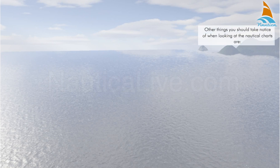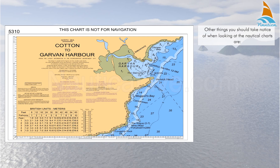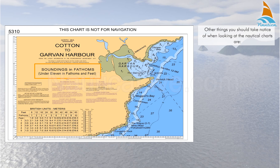Other factors that you should take notice of when looking at the nautical chart are the depths note. This shows which units of measurement are used to indicate the depths on the chart. You may read soundings in fathoms and feet, or soundings in meters.